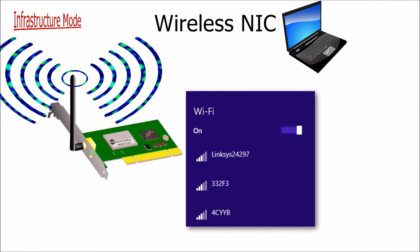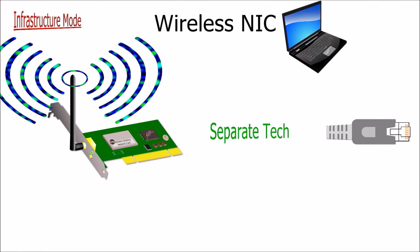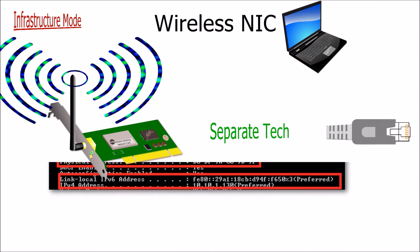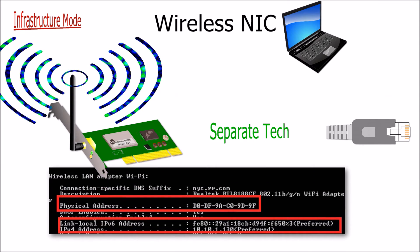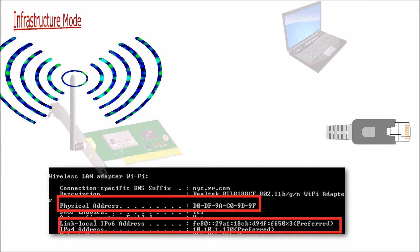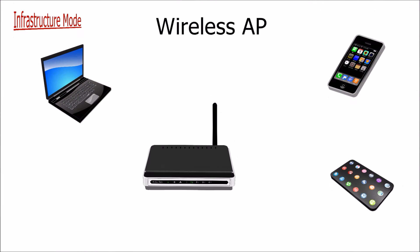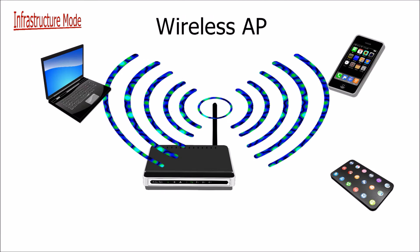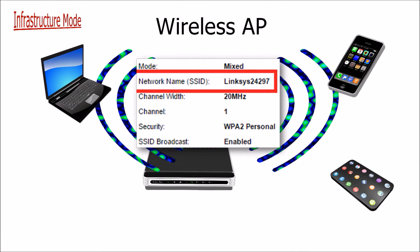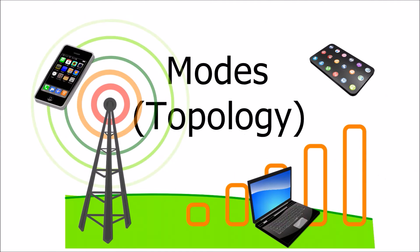The NIC will first scan the surrounding area for available access points. Because wireless connections are separate from LAN connections, wireless NICs are required to have their own MAC and IP addresses. For a network to provide wireless services, it needs at least one wireless access point, which serves as the central connecting point for wireless devices and broadcasts its service set network identifier (SSID).